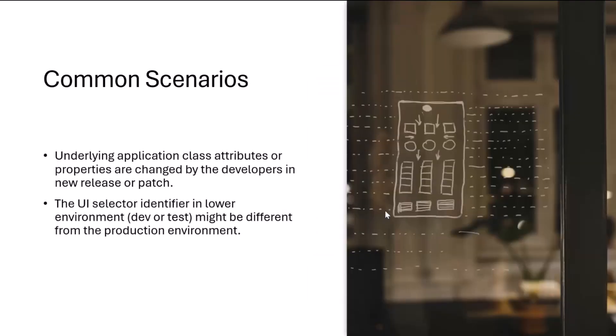The most frequent problems we face in UI and web automation are: after a new release or patch of an underlying application, existing UI selectors in the desktop flow become invalid due to code or UI changes by the application developer. Secondly, when the underlying application in a lower environment like dev or test has different class or identifier for UI elements compared to production, the desktop flow will fail to identify those UI elements.